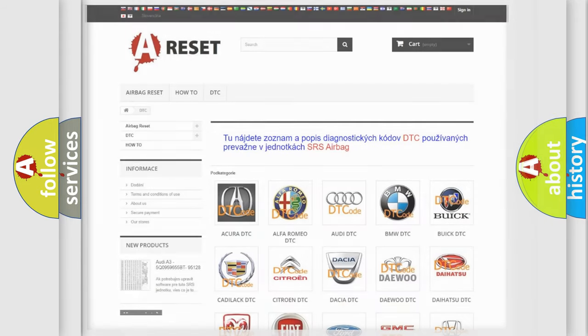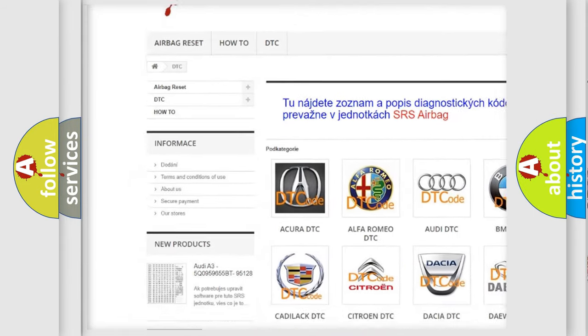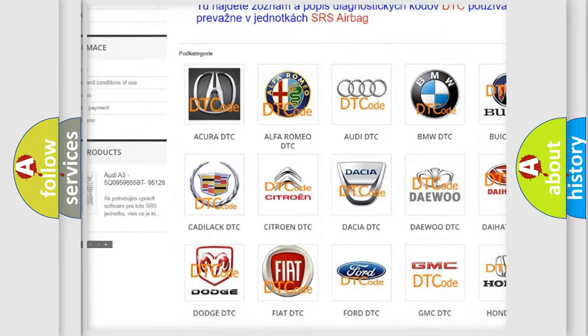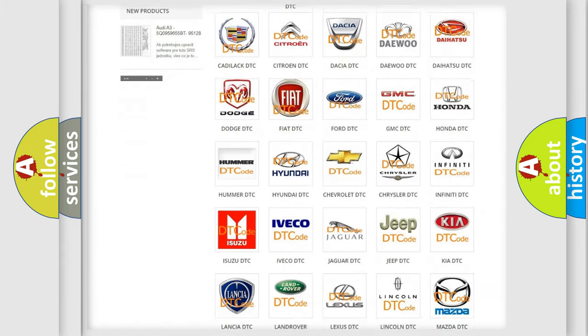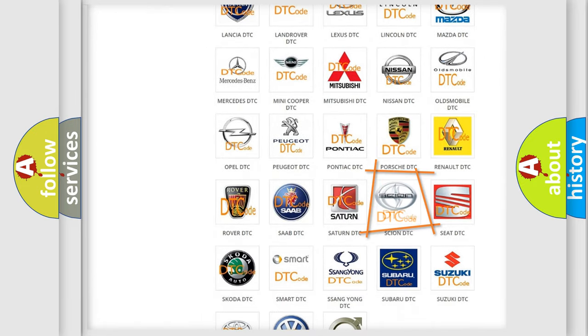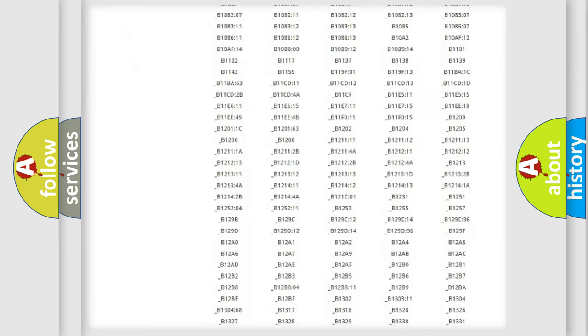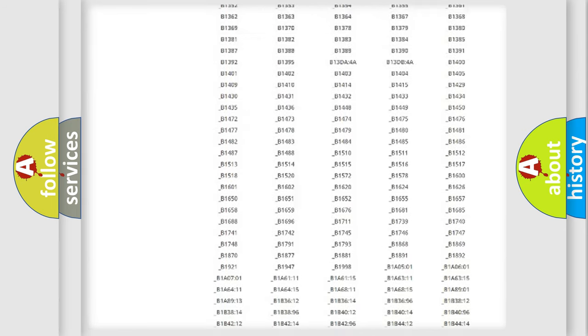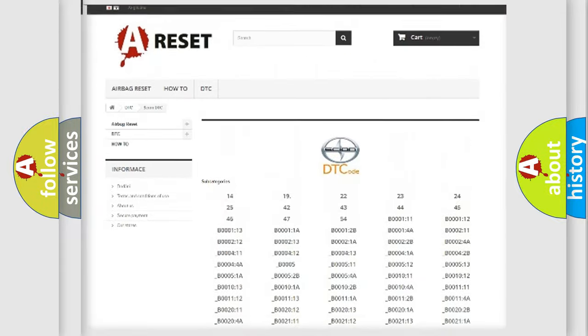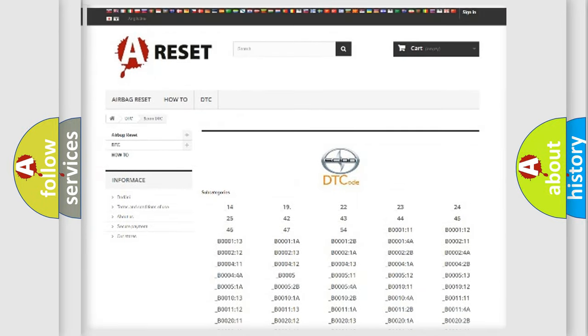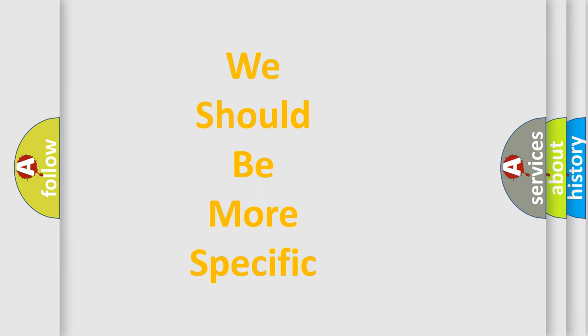Our website airbagreset.sk produces useful videos for you. You do not have to go through the OBD2 protocol anymore to know how to troubleshoot any car breakdown. You will find all the diagnostic codes that can be diagnosed in Scion vehicles, also many other useful things. The following demonstration will help you look into the world of software for car control units.